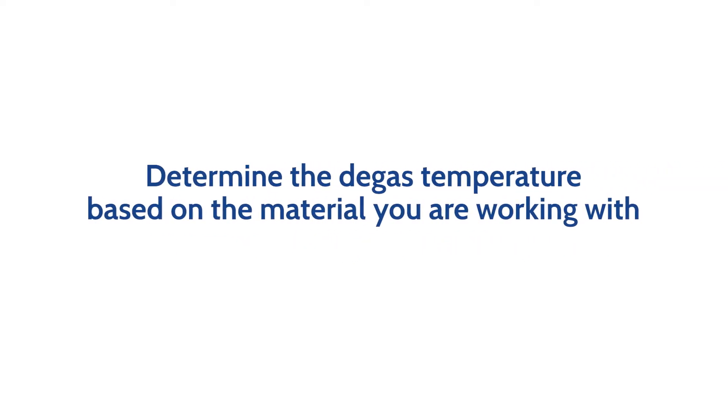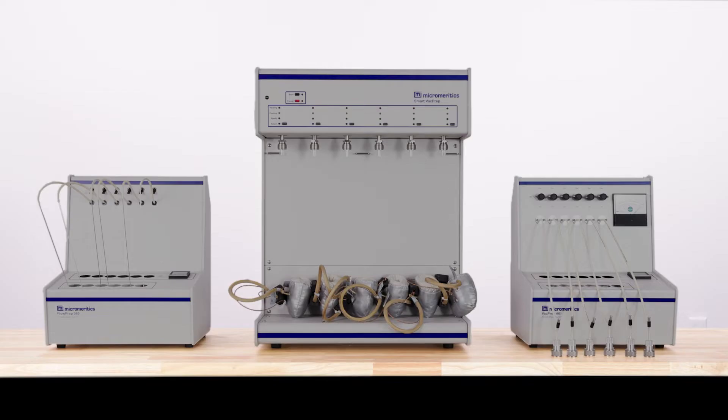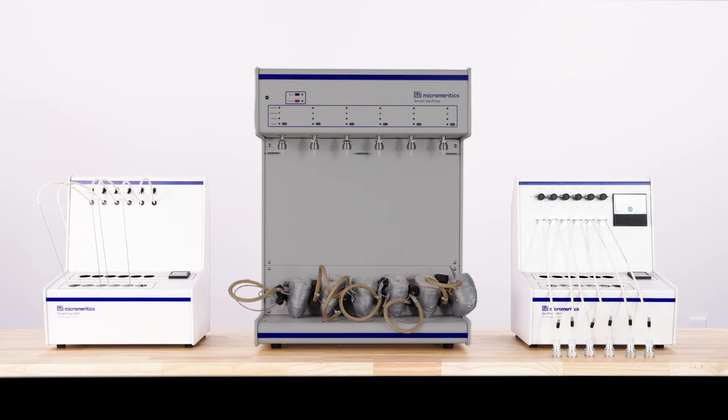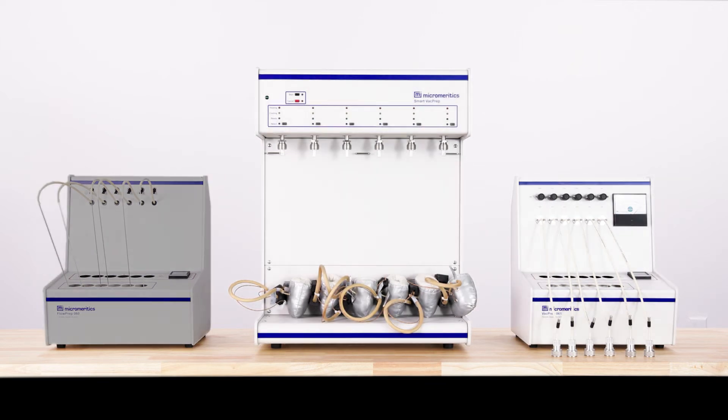The first step in the process is to determine the degas temperature based on the type of material you are working with. For a flow degas, either FlowPrep or VacPrep can be used. For a vacuum degas, either VacPrep or SmartVacPrep can be employed.